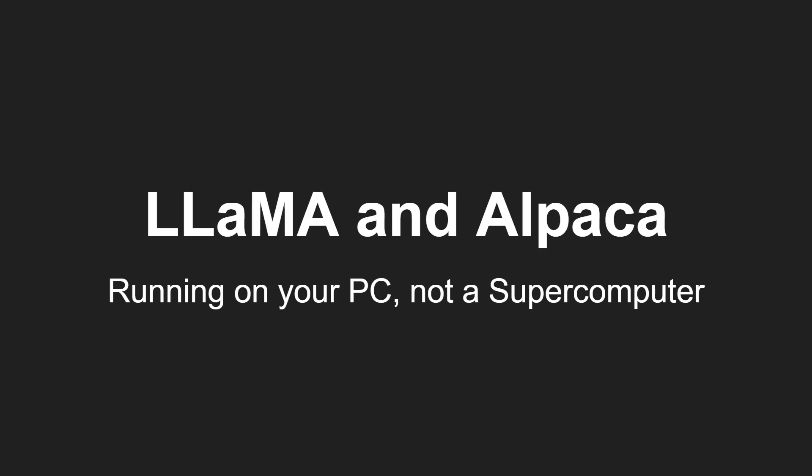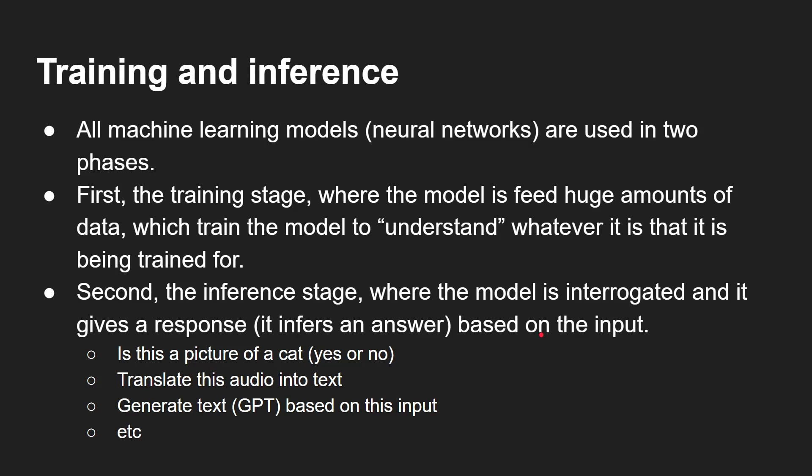To get these generative pre-trained transformers — GPT — these language models running on a PC and not on a huge supercomputer, we're going to be looking at LLaMA and Alpaca. All machine learning models — neural networks — are used in two phases: first the training stage, where the model is fed huge amounts of data to understand whatever it's being trained for; and second the inference stage, where the model is queried and infers an answer based on your input.